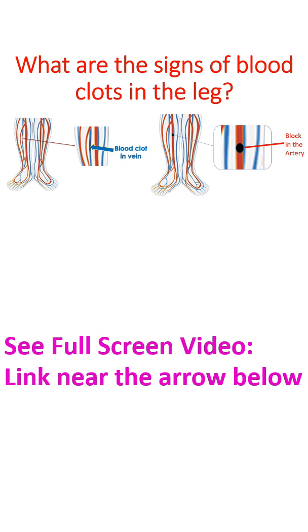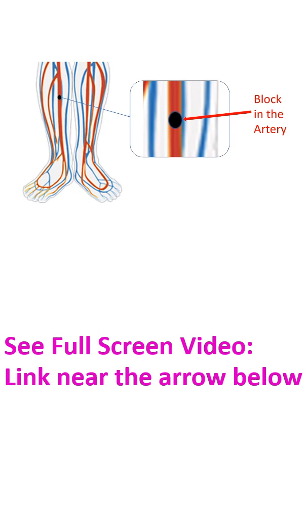If the occlusion of the artery persists for a long period, the limb will become black with death of cells called as gangrene. This occurs when the block occurs abruptly.